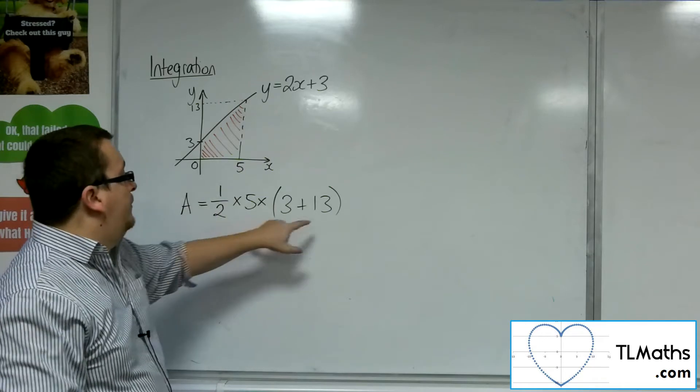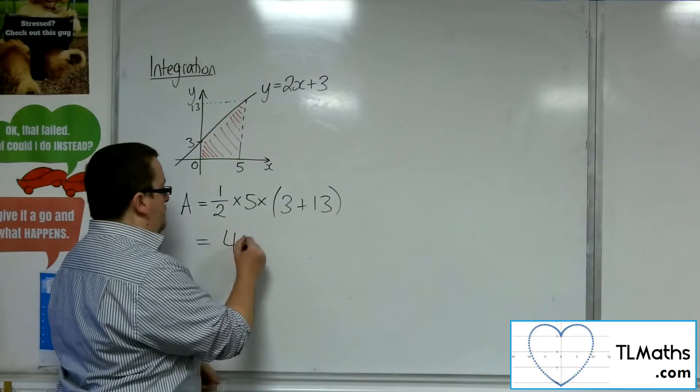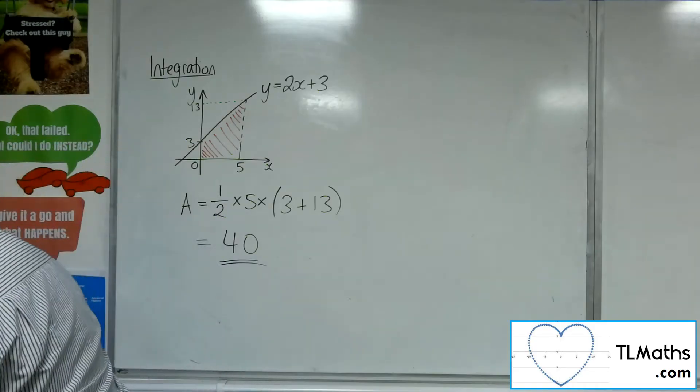Now, 16, half of 16 is 8, 5 lots of 8 is 40. Okay, so the area of that shape is 40.